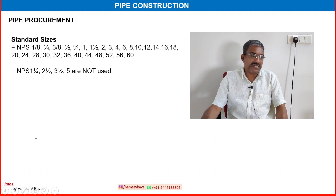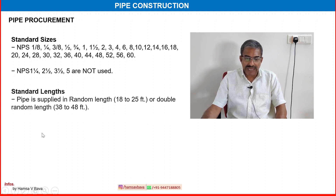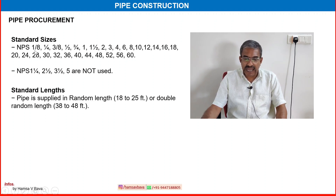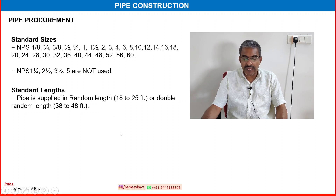Another important topic is pipe procurement. Standard sizes are available ranging from NPS 1/8 to around 60 standard sizes. Standard length: pipe is supplied in random lengths of 18 to 25 feet, or double random length of 38 to 48 feet.